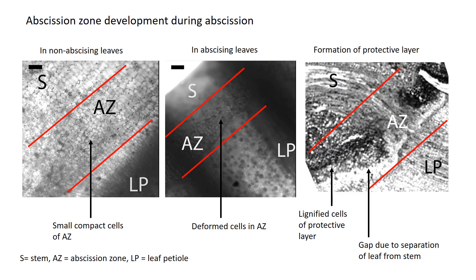Cell differentiation in the abscission zone occurs in response to abscission signals. The first and most obvious change in the abscission zone cells is the breakdown of the middle lamella and loosening of the rigid cell wall structure. This leads to deformed cells in this zone. Further, the cells in the abscission zone are lightly lignified or suberized to form a protective layer. Finally, separation of tissues between the parent plant and the leaf occurs outside the protective layer, resulting in the shedding of the leaf. The intact protective layer forms a scar on the stem which serves as a physical barrier against water loss and opportunistic pathogen attack.